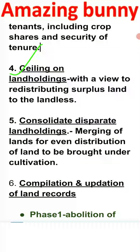The fourth is ceiling on land holdings. Ceiling means a limitation — fixing that a person can hold a maximum of approximately 200 acres of land, and beyond that the land will be redistributed. Even if a person is staying in one state and has assets in another state without doing anything there, the ceiling phenomenon will apply. The fifth is consolidation of land holdings — merging small scattered patches of land together and redistributing them so they can be brought under cultivation.